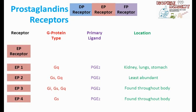Coming to the EP receptor, there are four subtypes: EP1, EP2, EP3, and EP4. PGE2 is the primary ligand for all EP receptors. EP1 is of Gq type; EP2 is of Gs as well as Gq type; EP3 is of Gs, Gq, and Gi type; whereas EP4 is of Gs type. EP1 is located in kidneys, lungs, and stomach. EP2 is the least abundant, whereas EP3 and EP4 are found throughout the body.